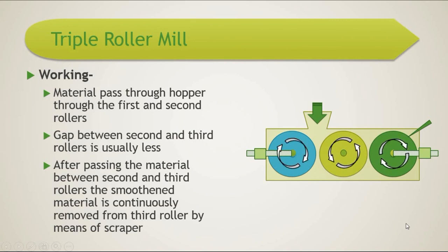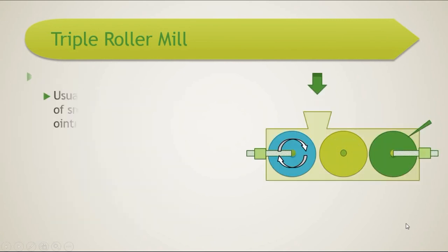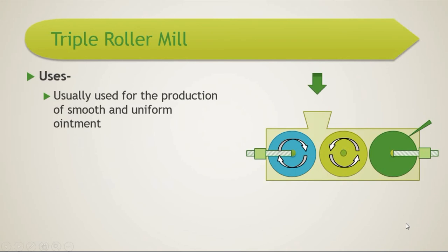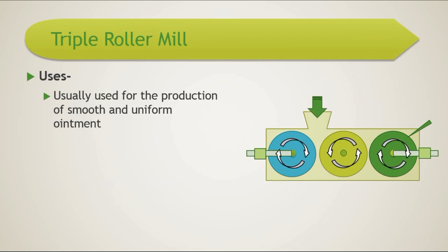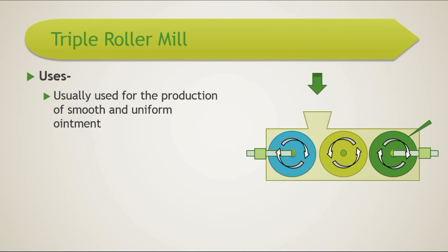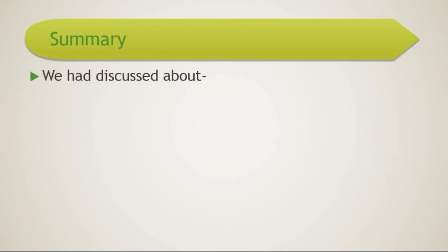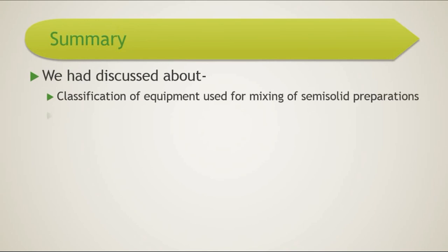The triple roller mill is usually used for the production of smooth and uniform ointments. To summarize, in this video we discussed the classification of equipments used for mixing of semi-solid preparations along with their construction, working, and applications.